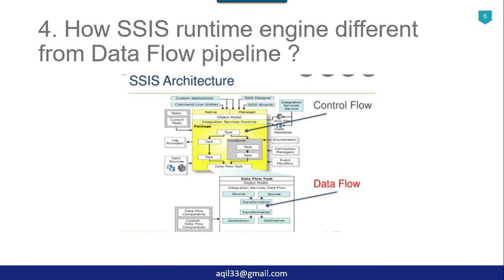On the other hand, the SSIS data flow pipeline engine is responsible for executing the data flow in the SSIS package. At runtime, the SSIS data flow engine creates an execution plan and then executes that plan. The data flow engine pulls the data from the source, stores it in memory, executes the required transformations, and then finally loads the data into the destination.